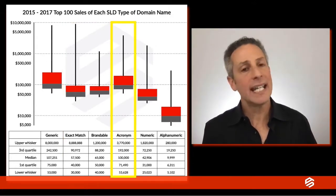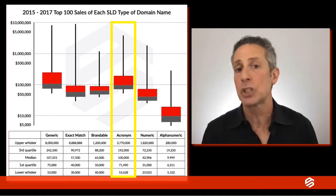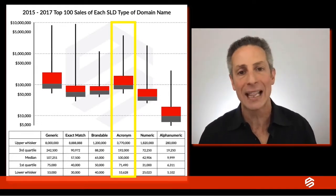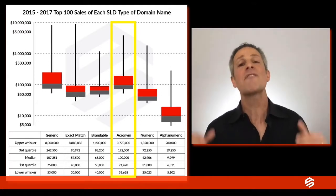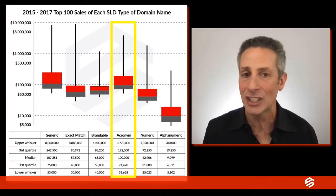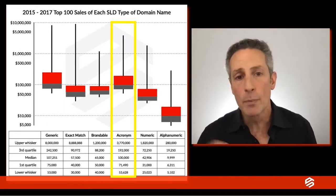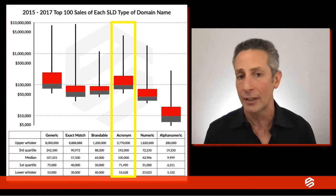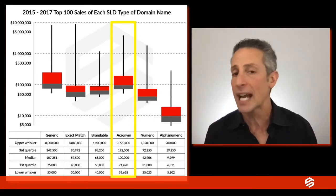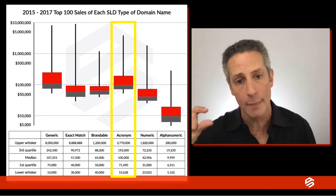Acronym domain names are an interesting asset class with a middle 50% that is much higher than all except generic domain names. This is attributed to the fact that two-letter domain names like hg.com, la.com, and px.com have been on fire the past few years. Throw in a cryptocurrency-related domain name sale like eth.com, the acronym for Ethereum, and you've got a big skew. In fact, if we remove the top 14 sales — all two letters and one three letter — the top of the box shifts down from $192,000 to $132,000 and becomes a very narrow box, similar to brandable domain names.